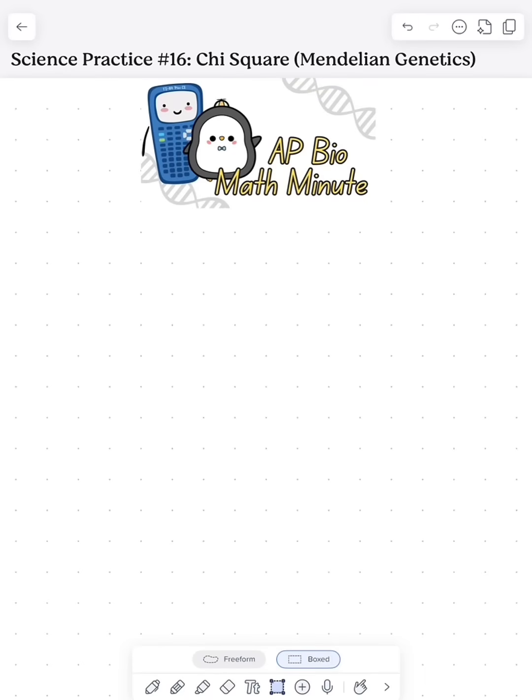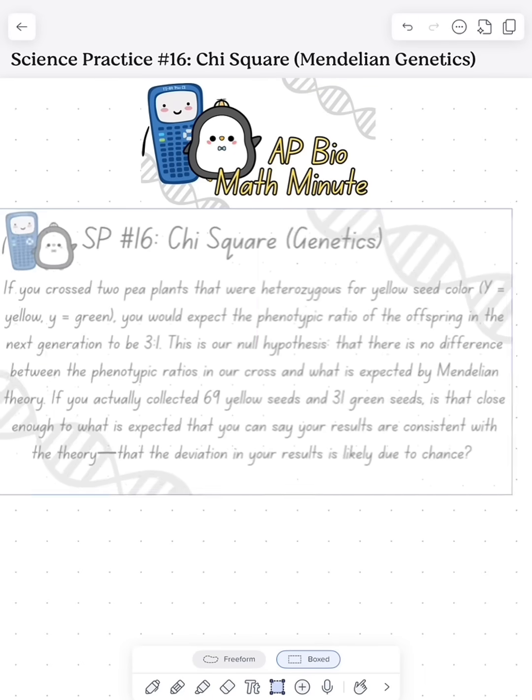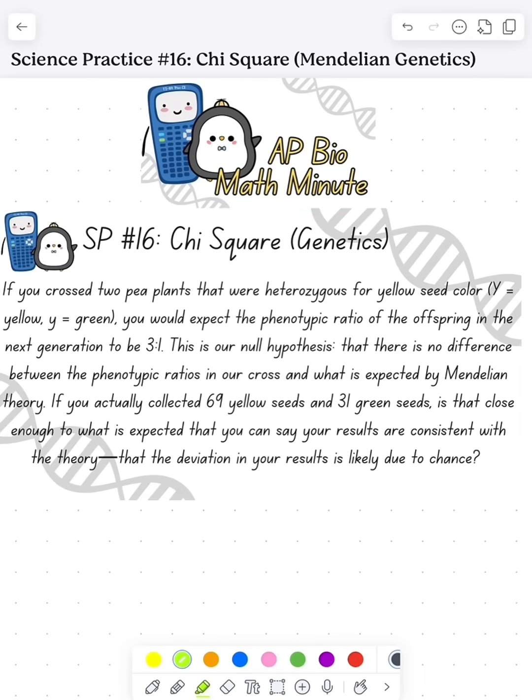I'm going to do an AP Bio Math Minute looking at chi-square on Mendelian genetics. If we did a monohybrid cross, we would expect to have a 3 to 1 ratio of yellow to green seeds.